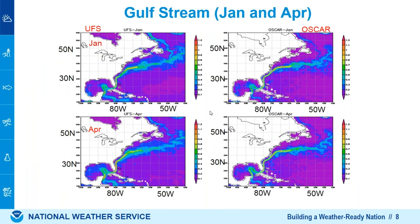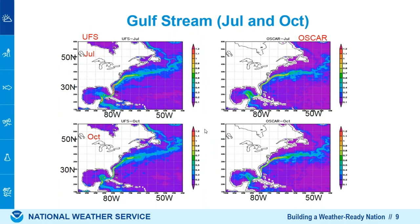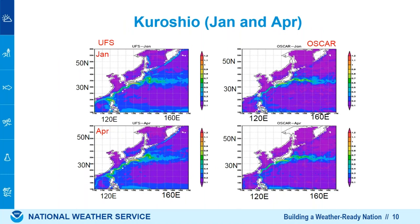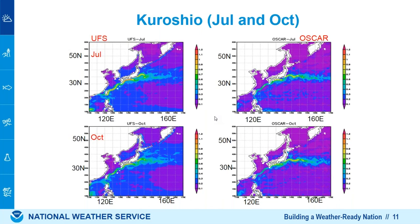Next is the Gulf Stream. In our previous CFSv2, we used half-degree ocean resolution, so the Gulf Stream and Kuroshio were kind of weak. But in the UFS system, we adopted GFDL's quarter-degree setting. You can see the magnitude and stretch of the Gulf Stream are pretty close to observations for January, April, July, and October. In the October case, the UFS is slightly weaker than OSCAR.